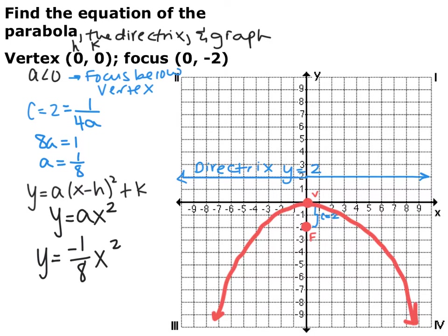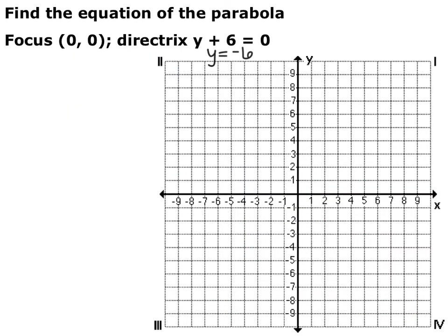The vertex is always in between the focus and the directrix. If the focus is below, it's inside the parabola, so it faces down. Now we're given the focus and the directrix and want to find the equation of the parabola. The vertex is halfway between the focus and the directrix in line — so if the focus is (0, 0) and the directrix is y equals -6, then the vertex is at (0, -3).